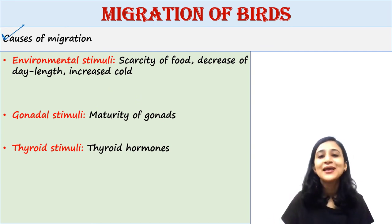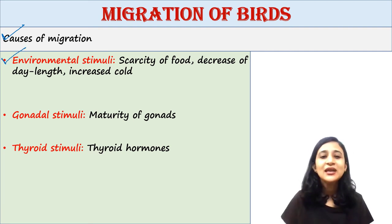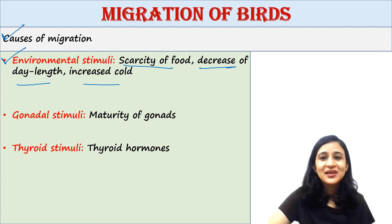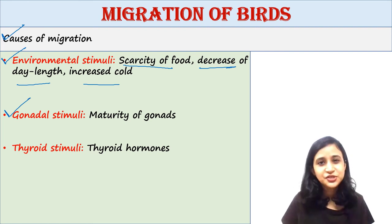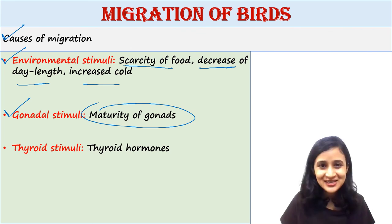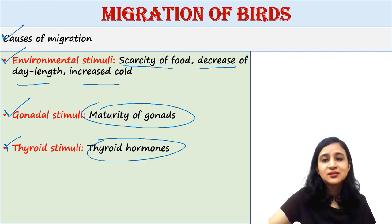Next are the causes of migration. Several theories explain why birds migrate. First, environmental stimuli: scarcity of food, decrease of daylight, and increased cold excite birds to migrate to better, more suitable places. Second, gonadal stimuli: the urge to migrate occurs due to the maturity of gonads, which instigate birds to migrate towards their breeding places. Third, thyroid stimuli: certain thyroid hormones regulate the instinct to migrate.